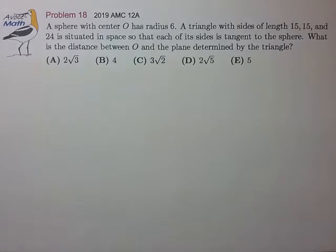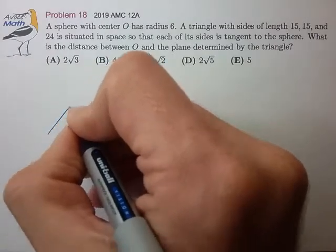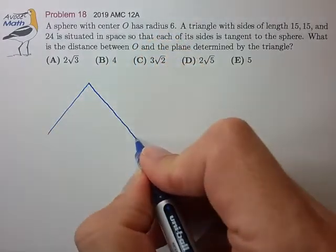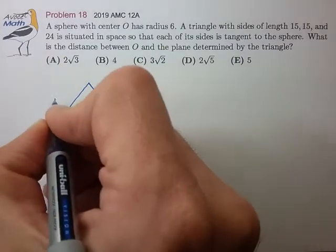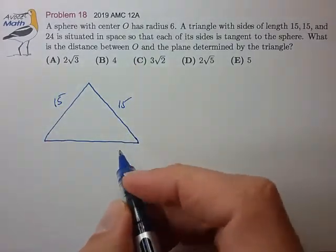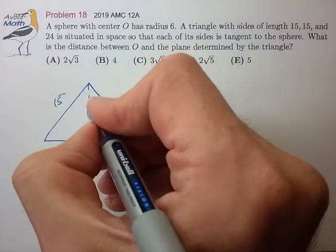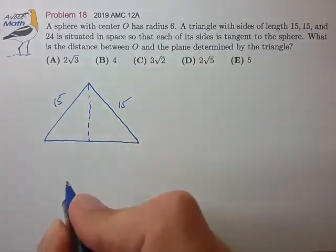Okay, I guess we want to start off with the plane of the triangle. Let's draw what that triangle looks like. It has sides 15, 15. It's isosceles, so let's just draw the height.